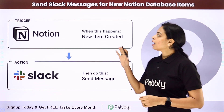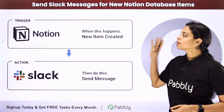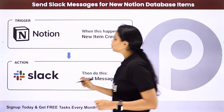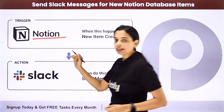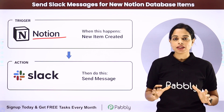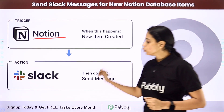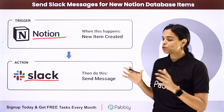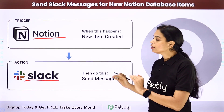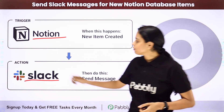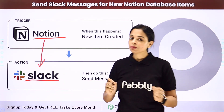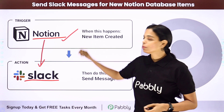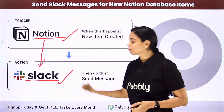In this video we are going to see how to send Slack messages for new Notion database items. Notion is a note-taking platform where every time a new database item is created, you want to inform your team by sending messages on Slack, which is a social messaging service. To integrate the two applications, we can use Pabbly Connect software, where the trigger application would be Notion and the action application would be Slack.